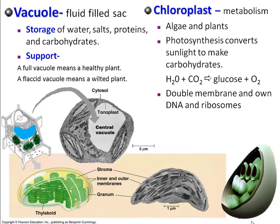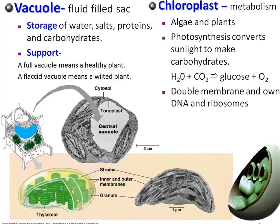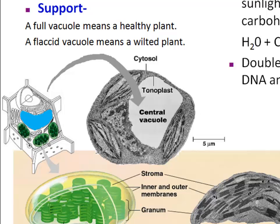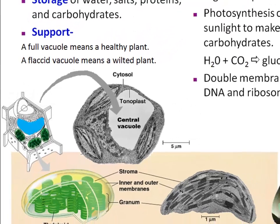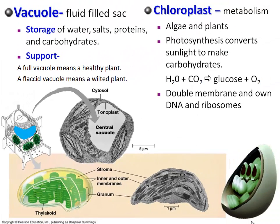The second purpose is support — support from the inside. As you fill that central vacuole, it puts a lot of pressure on the cell membrane pushing outward, which gives you a nice plump, fat kind of cell. Healthy plants have full vacuoles, whereas plants that are wilting have vacuoles that are actually rather empty. So the vacuole serves as both a support and storage compartment.